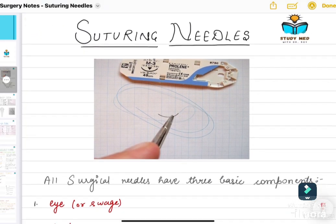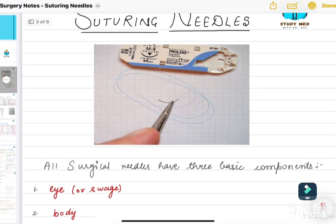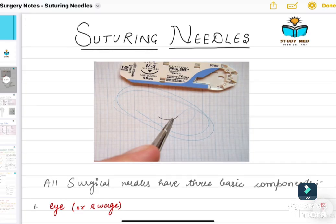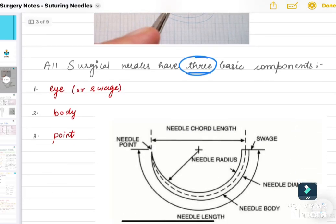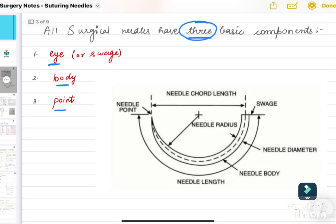All surgical needles have three basic components. As you see, there are three basic components of any needle. First is eye, body, and point. This portion is called the eye, where the thread or suture is linked to the needle. This whole portion is called the body of the needle, and this end area is the needle point.